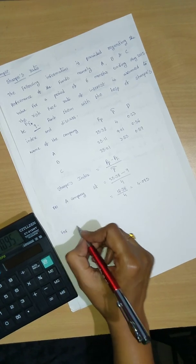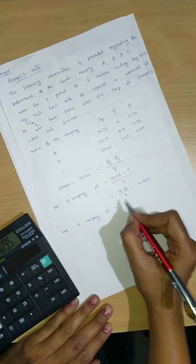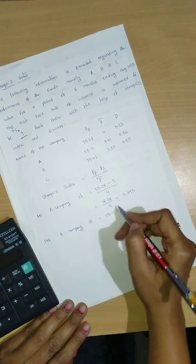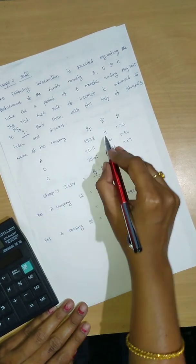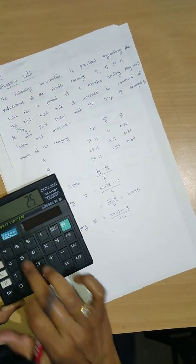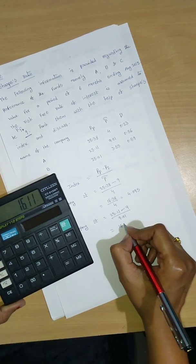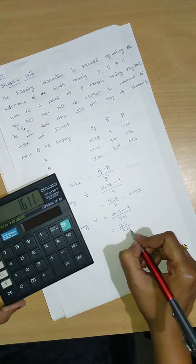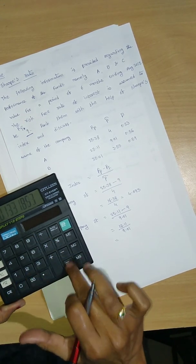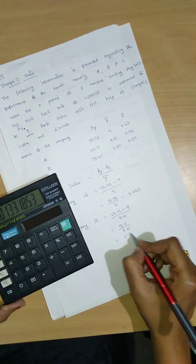And next, for Company B, Sharpe's ratio equals B company's RP, 25.11, minus RF, 9, divided by standard deviation 9.01. Here 25.11 minus 9 equals 16.11 divided by standard deviation 9.01 equals 1.788.